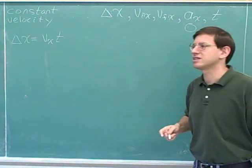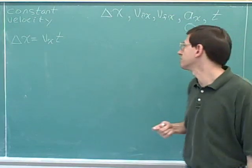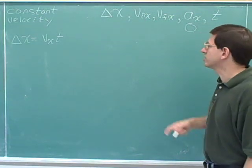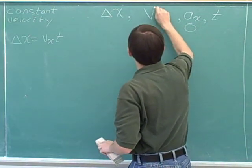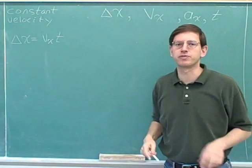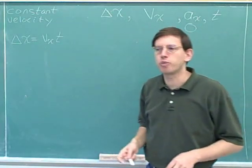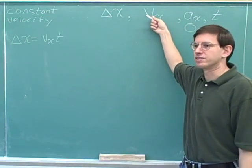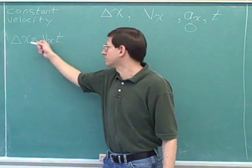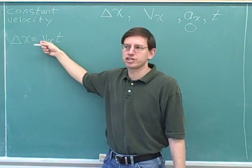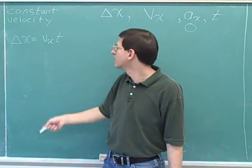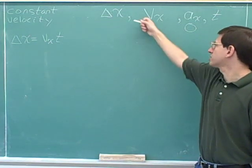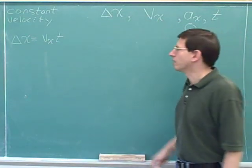If the initial velocity is the same as the final velocity, it's pointless to have two different variables for them. When dealing with constant velocity, we can eliminate both and just replace them with a single symbol for velocity. There's no point distinguishing initial from final velocity since they're the same — so we just refer to 'the velocity' since it's not going to be changing.